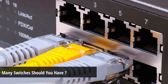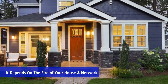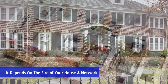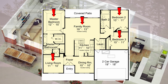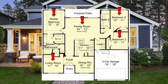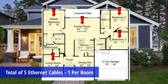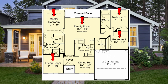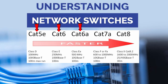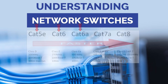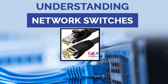The answer will vary depending on the size of your house and the size of your home network. For example, if you have a three-bedroom house with a family room and a living room, most new home builders will install one ethernet cable per room, giving you a total of five ethernet cables. When I say ethernet cables I mean Cat5e or Cat6 — Cat6 has become the industry standard over the last few years.